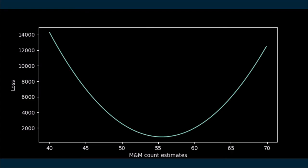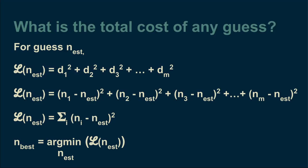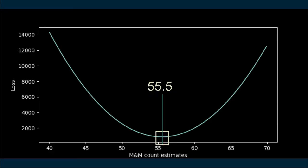Because we have computers, you can write code to do exhaustive exploration and plot the loss for every guess between 40 and 70. Visually you can see the lowest value, and the guess that minimizes the loss is about 55.5 M&Ms. This is numerical optimization: calculate the loss function and use exhaustive exploration to pick off the lowest value.